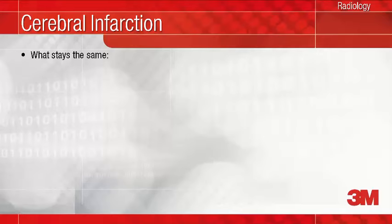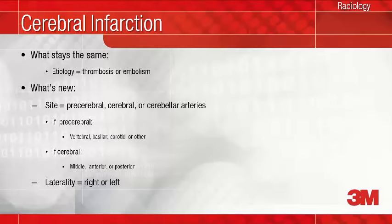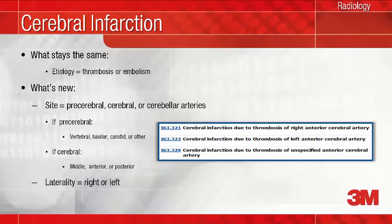What remains the same with cerebral infarction? The etiology of a cerebral infarction or stroke is still classified primarily by the cause or etiology — that is, whether it is due to thrombosis or embolism. What's new? ICD-10 has a number of new codes for cerebral infarction which identify the specific artery involved and, when applicable, whether it's the right or the left vessel. For example, you see here the codes for cerebral infarction due to thrombosis of the anterior cerebral artery. Be sure to include in your report the artery affected and its laterality when appropriate.